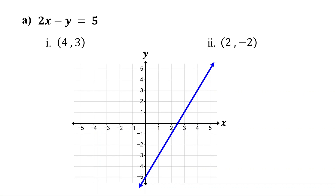To determine whether a point is on a line given a linear equation, first substitute the values of x and y from the point into the equation. Then simplify. If both sides of the equation are equal after simplifying, then the point is on the line. Otherwise, it is not on the line.